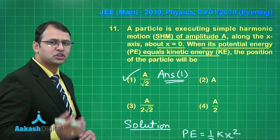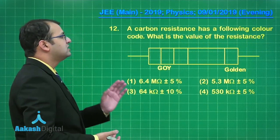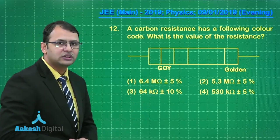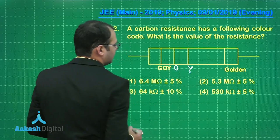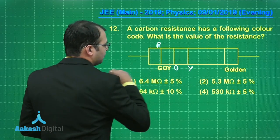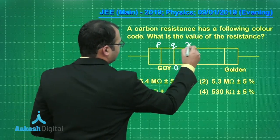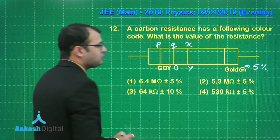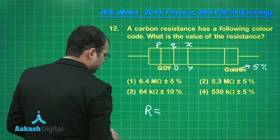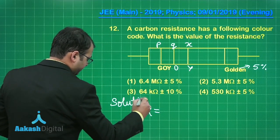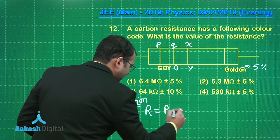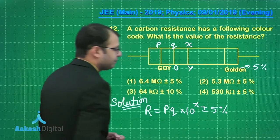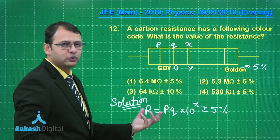Moving to the next question about carbon resistance with a given color code. The three colors are green, orange, and yellow, with a gold band. Green gives value P, orange gives value Q, yellow gives the power X, and gold indicates a tolerance of plus or minus 5%. The resistance formula is: resistance equals PQ into 10 to the power X, plus or minus 5%.